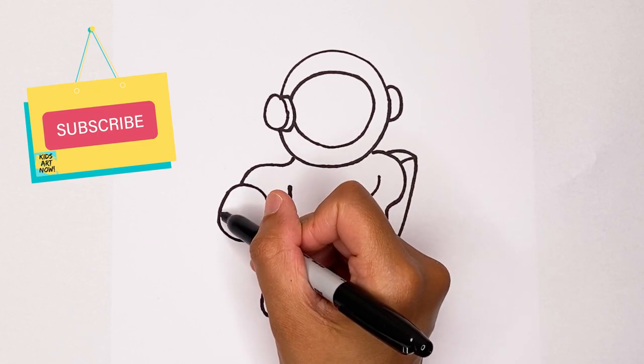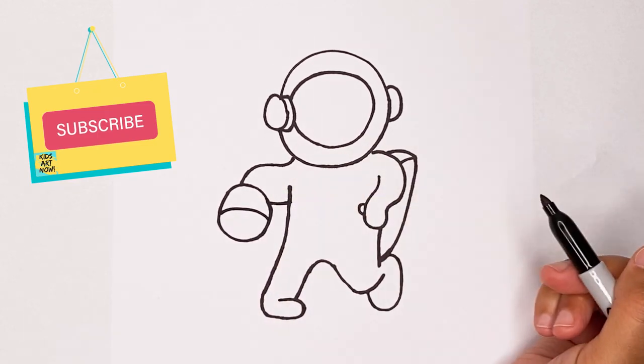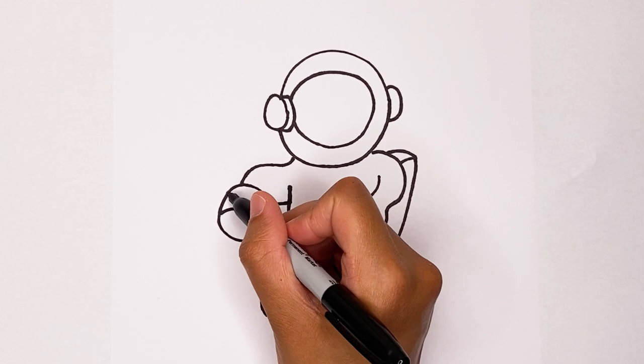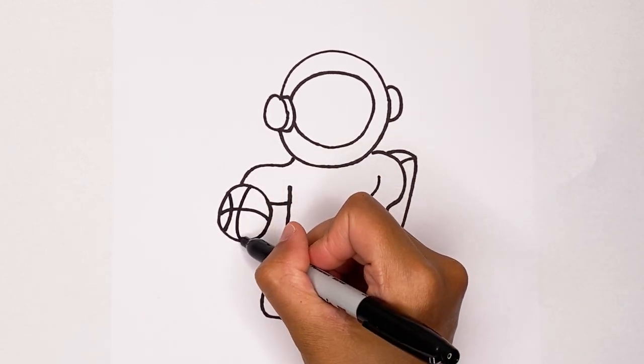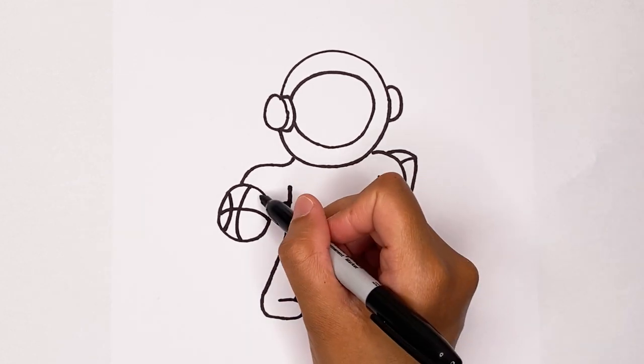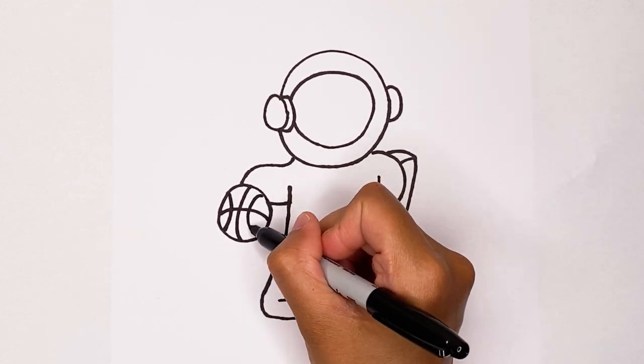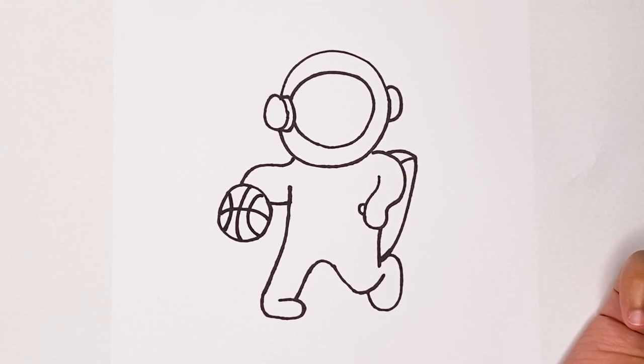For the basketball, I'm going to make a curve in the middle. And then there's going to be a curve line here, a curve line going this way, kind of in the middle, and then one more curve, just like that. Basketball.